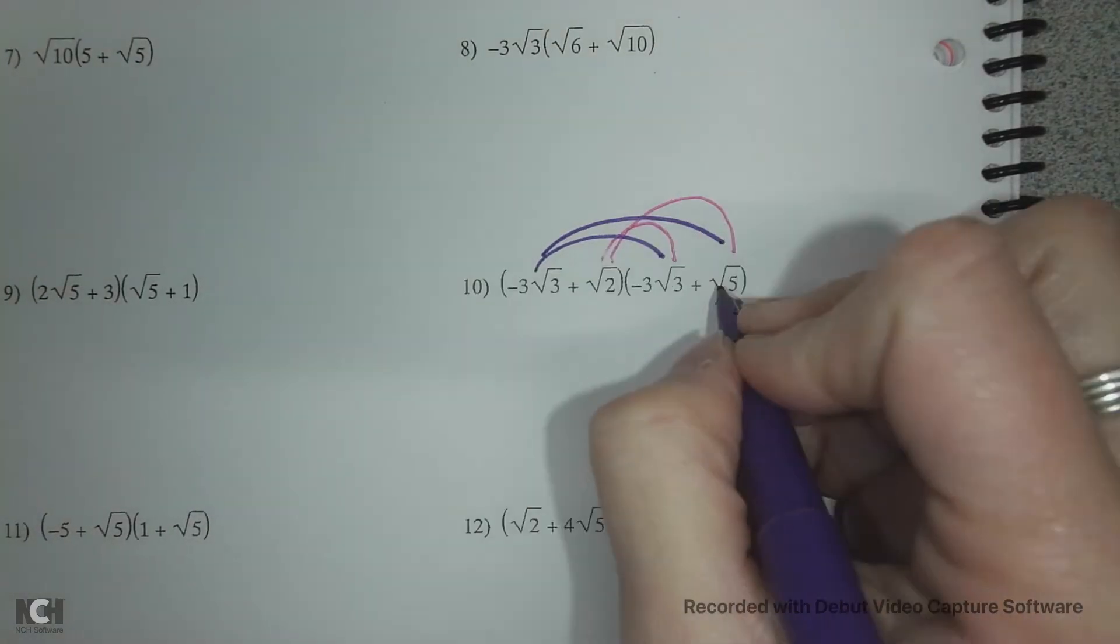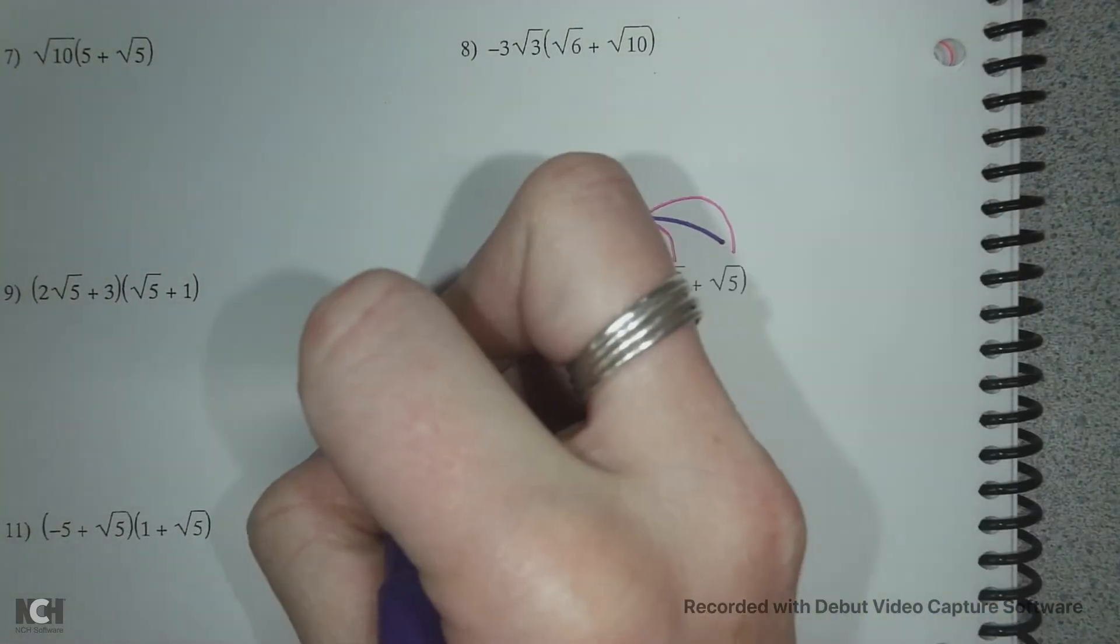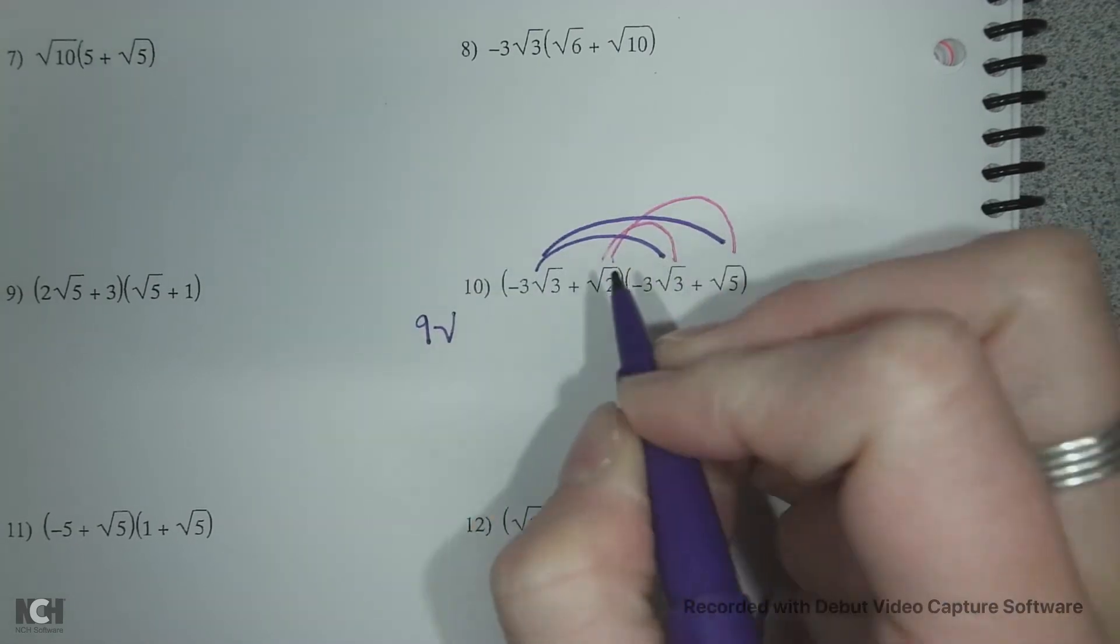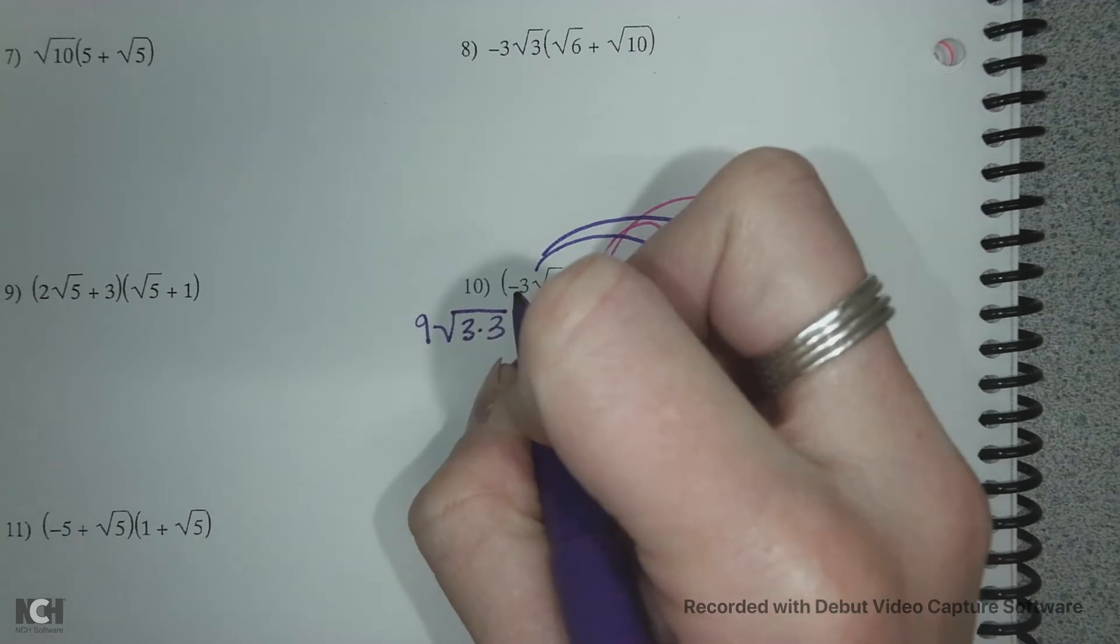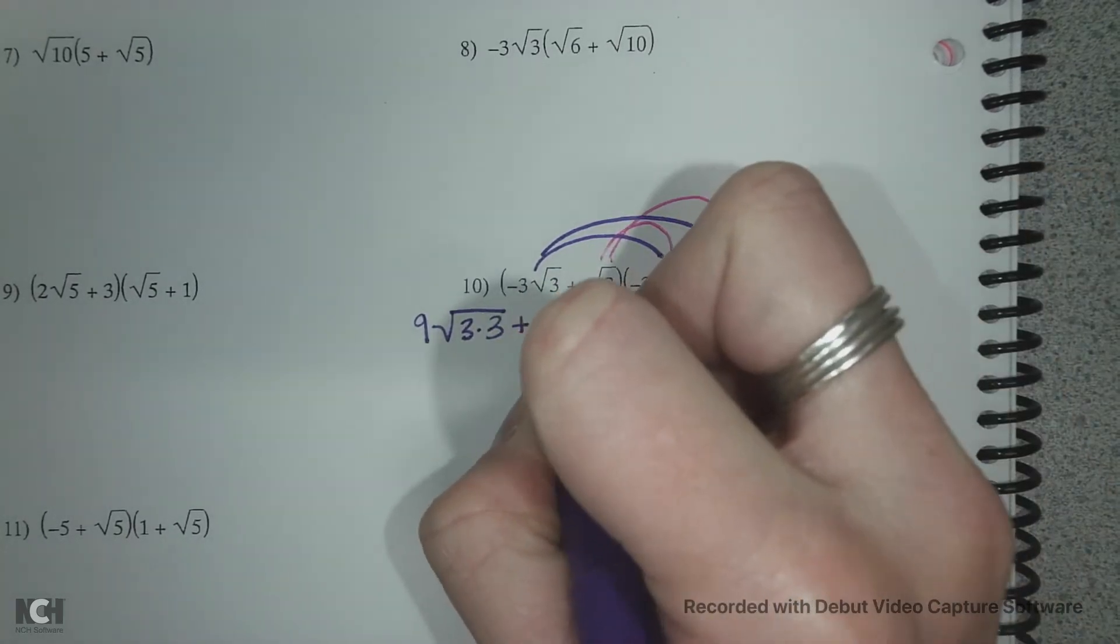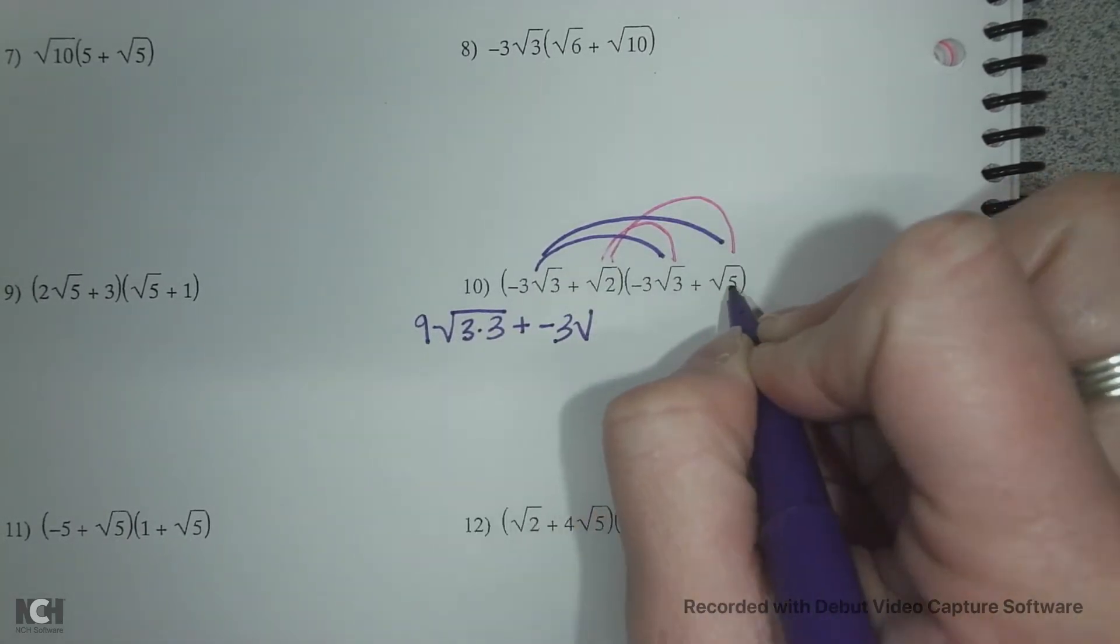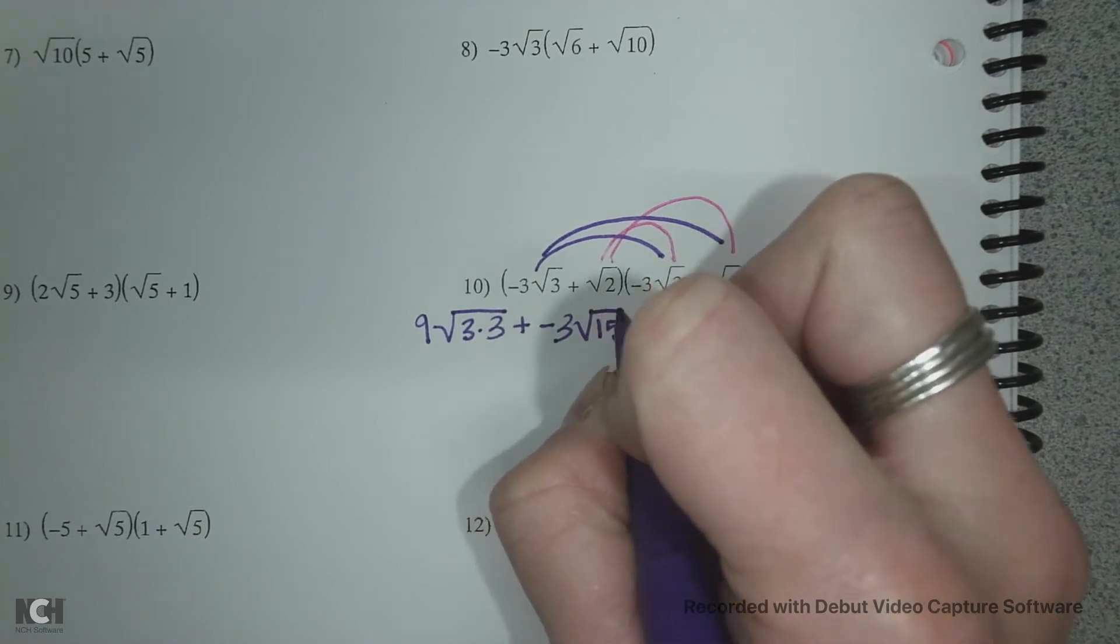So we're going to multiply negative 3 times negative 3 which is 9, and then I have 3 times 3 underneath my radical. And I have negative 3 times 1 which is negative 3, and then 3 times 5 is 15 under my radical.